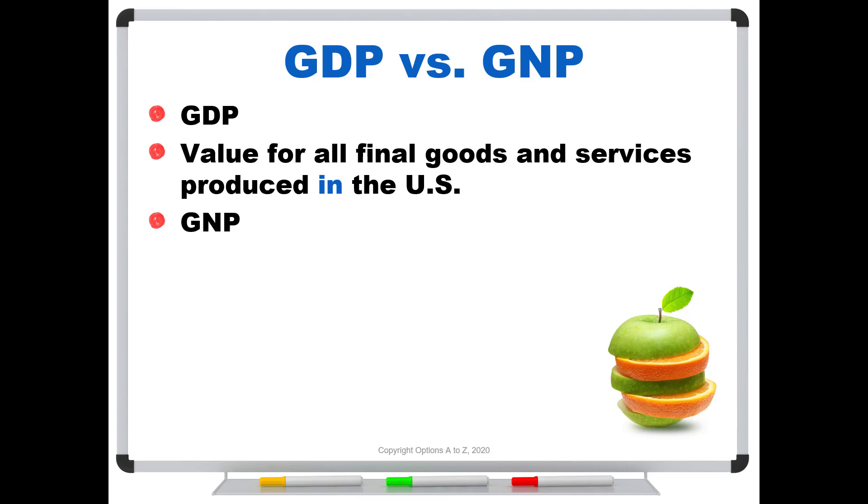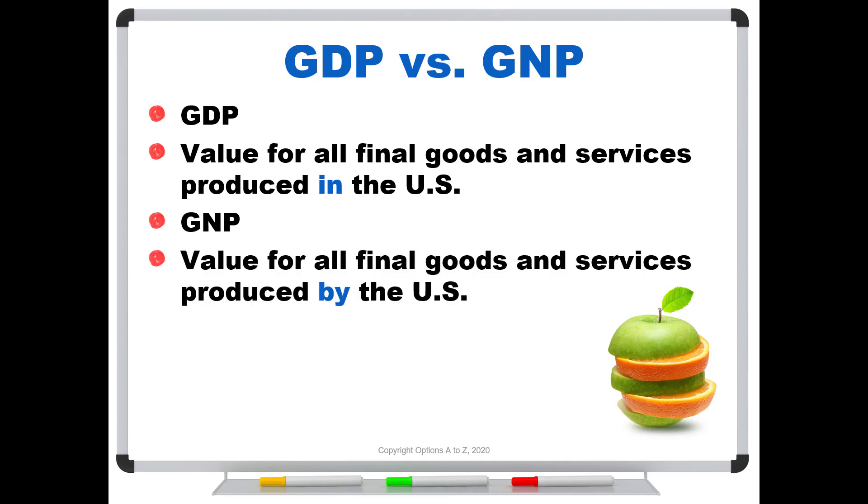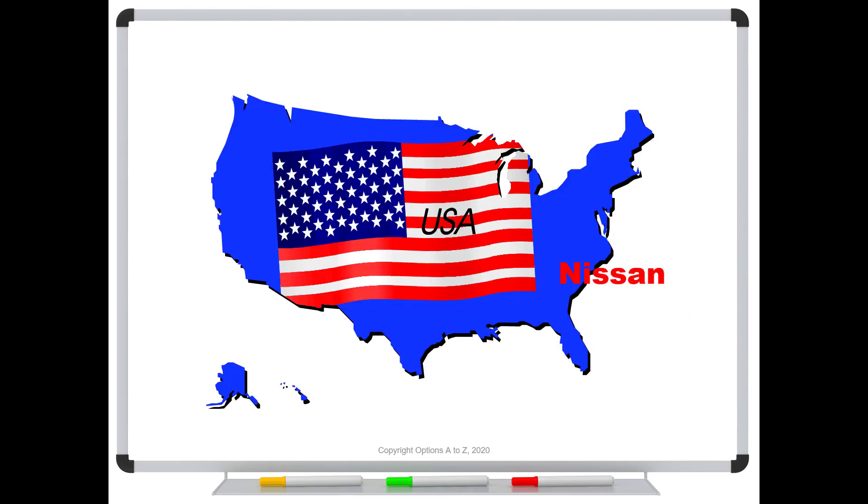GNP on the other hand is the same idea, value for all final goods and services, but it's produced by the US regardless of where this company may be located. So for instance, here's our US and we have, let's say a Nissan plant in Tennessee. It's also another one in Mississippi.